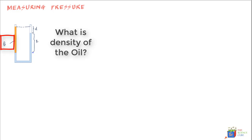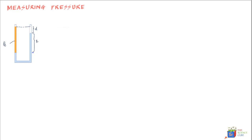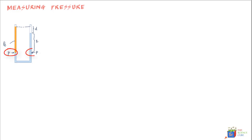Let's call this density rho_L — this is what we have to find. Since the liquids are not moving, the pressure at the bottom of the left side must equal the pressure at the bottom of the right side. If the pressure on one side were greater, it would push the liquid down until equilibrium was reached.